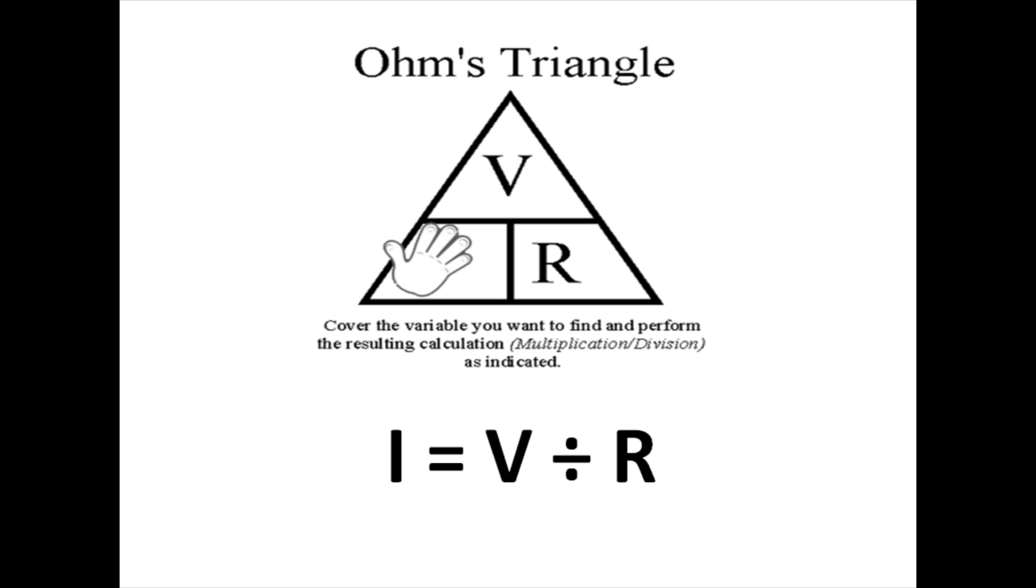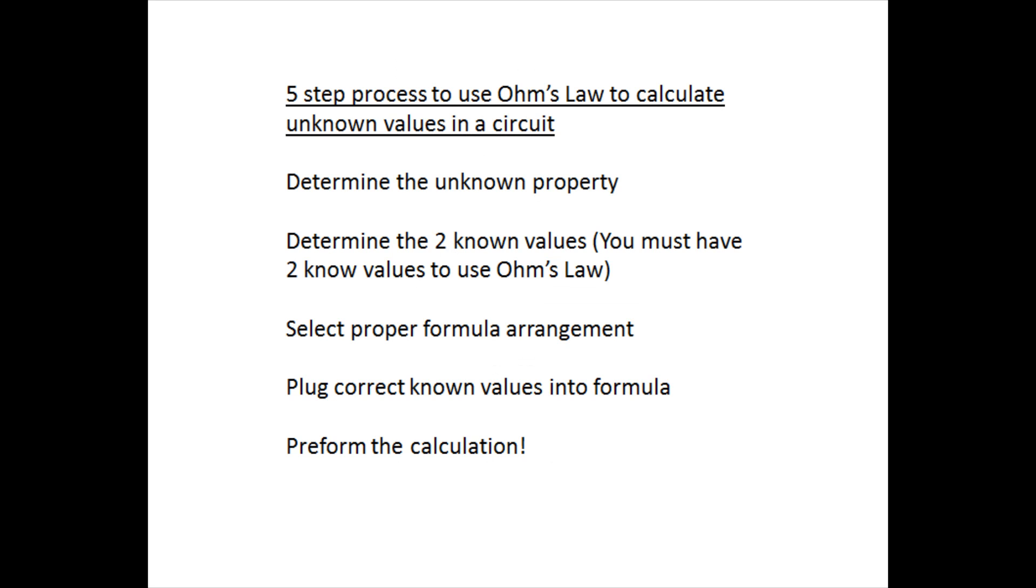And the resulting formula is current equals voltage divided by resistance. I've included a five-step process to help you to know how to work the Ohm's Law problems. First of all, number one, you have to determine the unknown property. Number two, determine the two known values. You must have two known values to use Ohm's Law. Number three, select proper formula arrangement. Number four, plug correct values into the formula. And number five, perform the calculation.